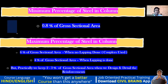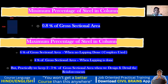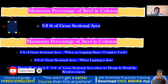Let's take a practical example. Consider a 230×750 column. You design it and provide one bar at each corner — that's 4 bars, minimum criteria satisfied. The steel area requirement may be met, but now check the spacing between bars on the 750 mm side.